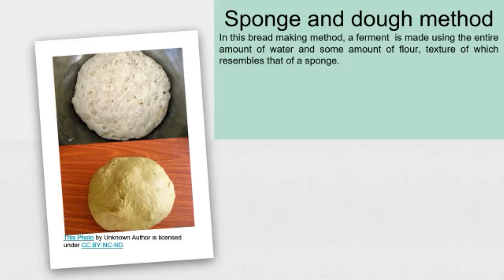Next word is sponge and dough method. In this bread making method, a ferment is made using the entire amount of water and some amount of flour. The texture of which resembles that of a sponge, and hence the name. Depending upon the amount of flour used — whether 25%, 50%, or 75% — the method will derive its name: quarter sponge, half sponge, or three quarter sponge.